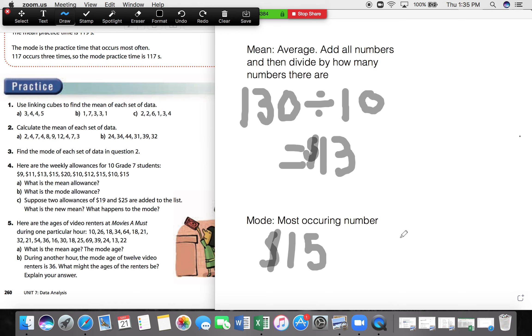Part C, I'll get you to do on your own. Suppose two allowances of 19 and 25 are added to the list. So part C, we'd have to take our pen, and we would draw on to that list, we would draw on two 19s.